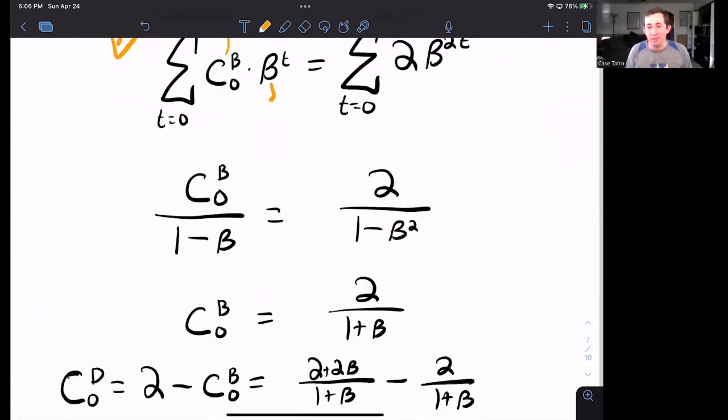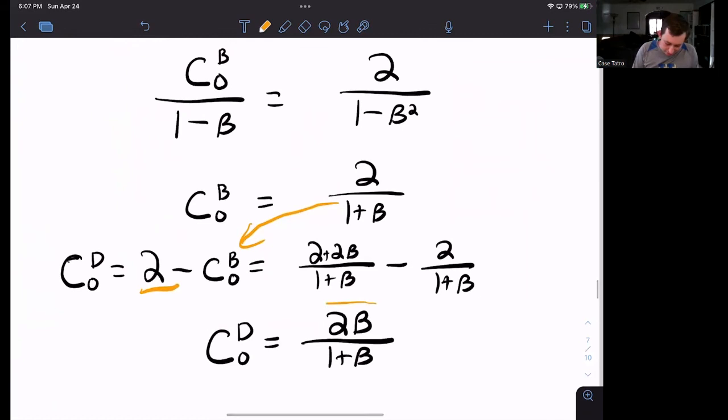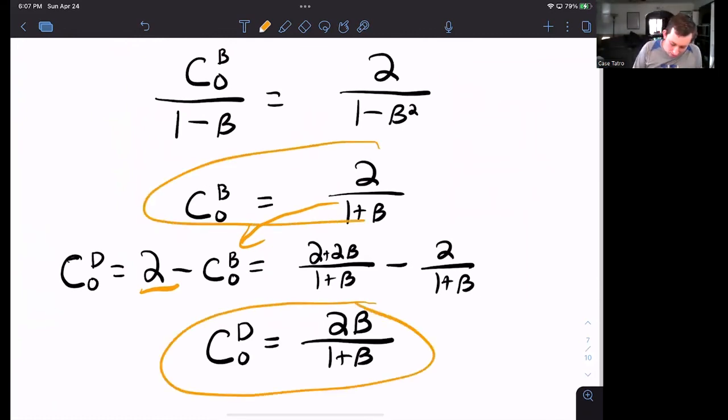I'm solving for Dave using that market clearing condition, knowing that the total number of coconuts in this economy is always equal to two. So if Bill is eating this number of coconuts, Dave is eating whatever is left. And this is the same allocation that we found in the Arrow-Debreu equilibrium.